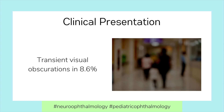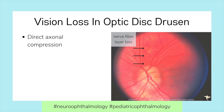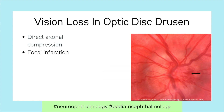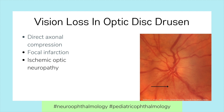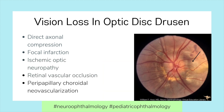8.6% of patients experience transient visual obscurations. There are five typical causes of visual loss in Optic Disc Drusen: direct axonal compression, focal infarction, ischemic optic neuropathy, retinal vascular occlusion, and peripapillary choroidal neovascularization. Visual loss from vascular causes is rare, and in most cases visual acuity is unaffected.